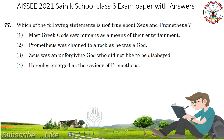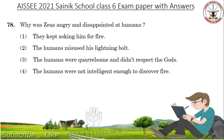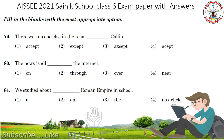Which of the following statements is not true about Gios and Prometheus? Answer is: Prometheus was chained to a rock as he was a god. Why was Gios angry and disappointed at humans? Answer: The humans were not intelligent enough to discover fire. Fill in the blanks with the most appropriate option. There was no one else in the room, dash calling. Answer is: Except.